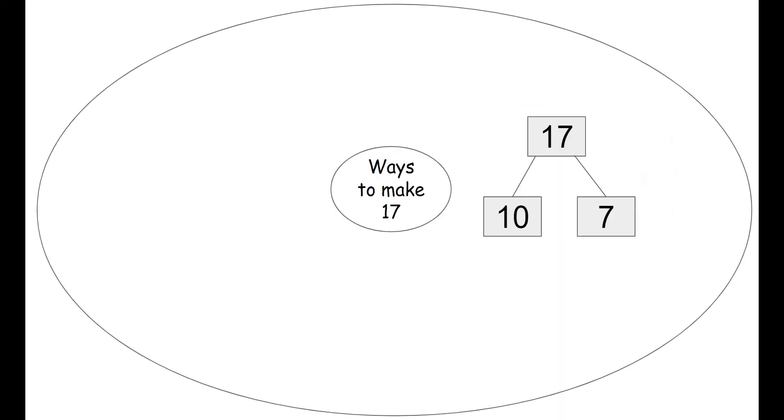So now we're going to use our circle map again to brainstorm some ways to make the number 17. So first we have our number bond. We put our 17 at the top because why? Because it's our biggest number.